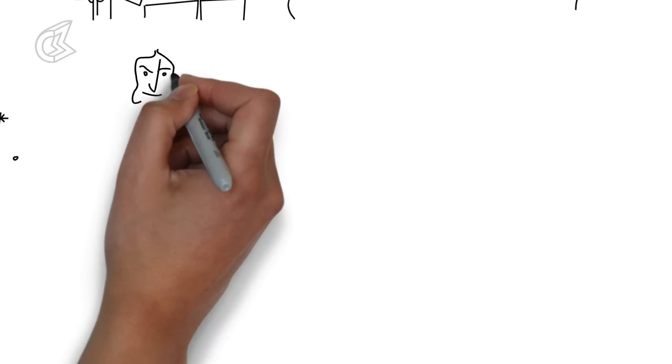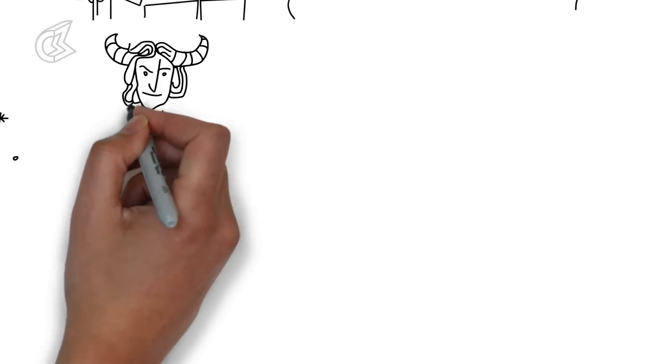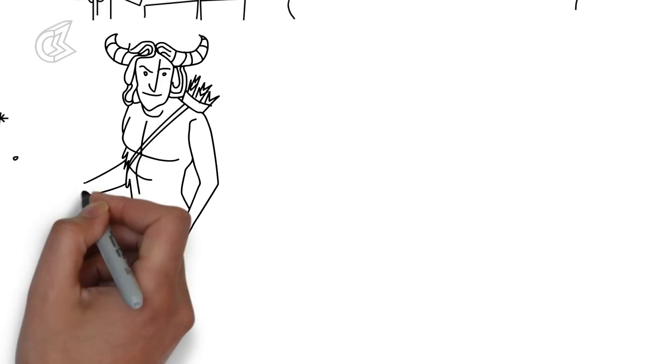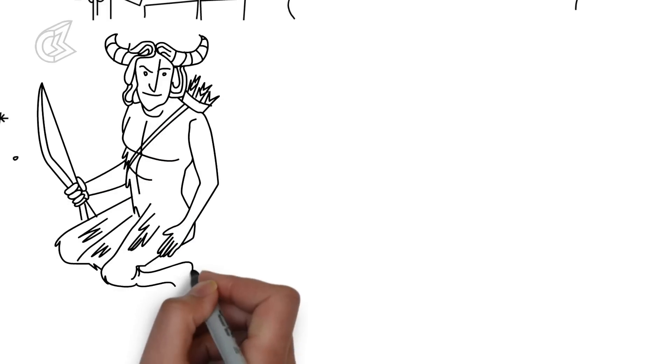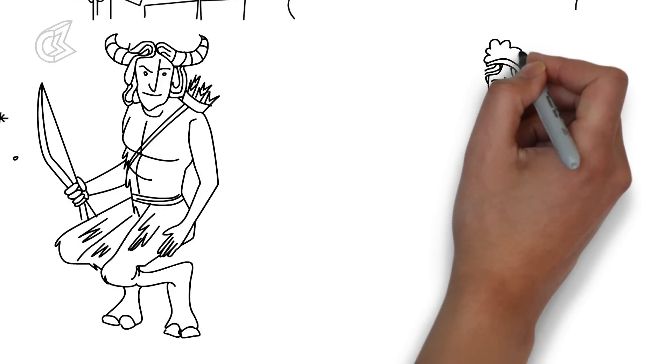Zeus' escapades knew no end. Disguised as a satyr, a bull, and even as other gods like Artemis, he continued seducing his way in and out of myth.